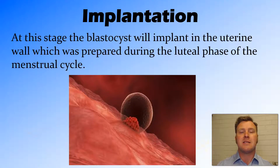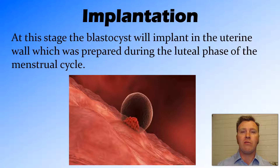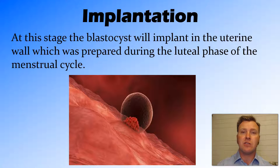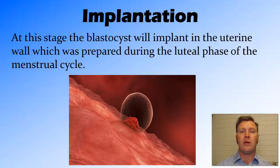This blastocyst is then going to travel down the oviduct to the uterus, where it will implant into the wall of the uterus — into the endometrial lining that has become larger and nourished throughout the menstrual cycle. Particularly in that second phase, the luteal phase of the menstrual cycle, where hormones cause the uterine wall to be ready for implantation so that it can nourish that blastocyst.